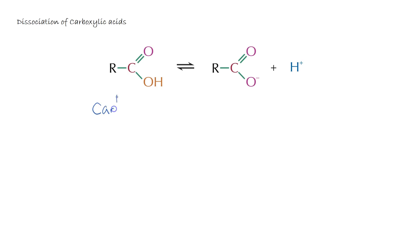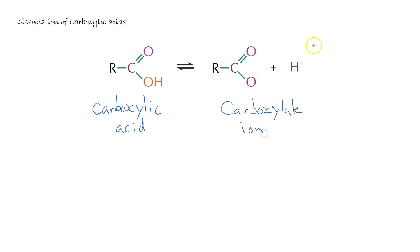Carboxylic acids are weak acids because they will lose one of their hydrogen ions and partially dissociate when dissolved in water. When this happens, you form the carboxylate ion and a hydrogen ion or proton. The negative charge is distributed around the carbon and the two oxygens, which is why it's stable. The equilibrium lies fairly heavily to the left-hand side, with only a small amount of the carboxylate ion and proton forming when dissolved in water.